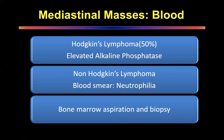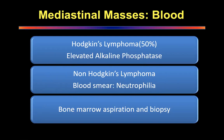The recording will go on the YouTube website. Hodgkin's lymphoma: elevated alkaline phosphatase in 50% of patients. Alkaline phosphatase can also be elevated in seminomas. Non-Hodgkin's lymphoma shows neutrophilia. Don't forget bone marrow aspiration and biopsy — this should be done if you're suspecting lymphomas. The diagnostic level of AFP is 500 micrograms.